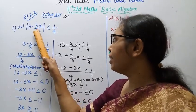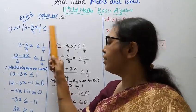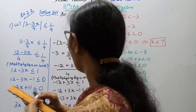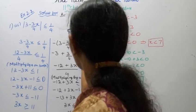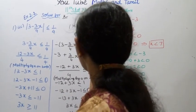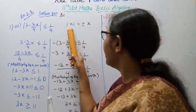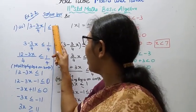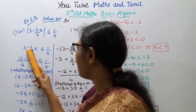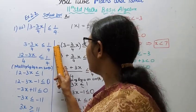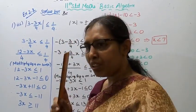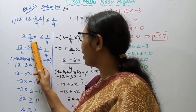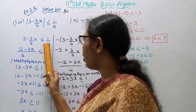The problem is: mod of (3 minus 3/4 x) less than or equal to 1/4. The mod of x means plus or minus x. So we apply the definition of absolute value to solve this.